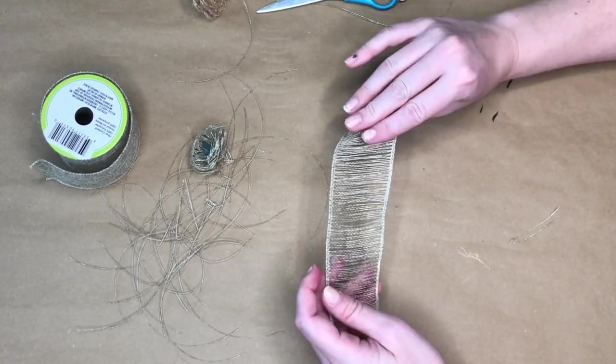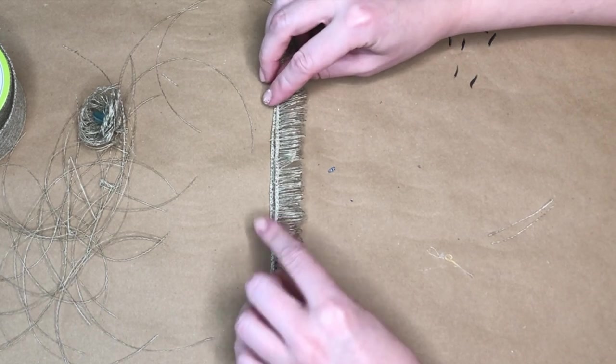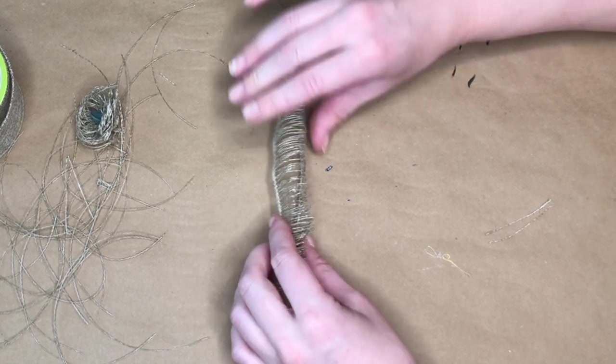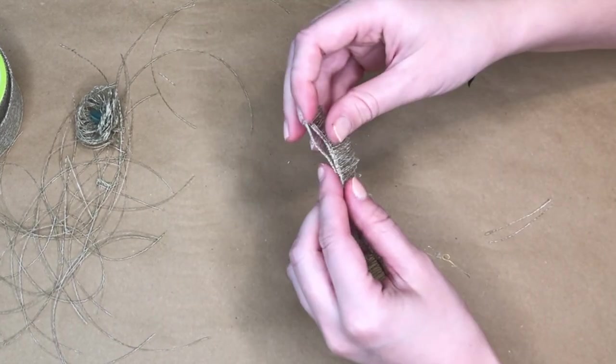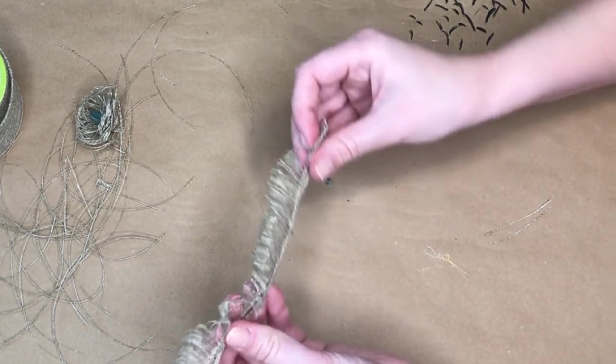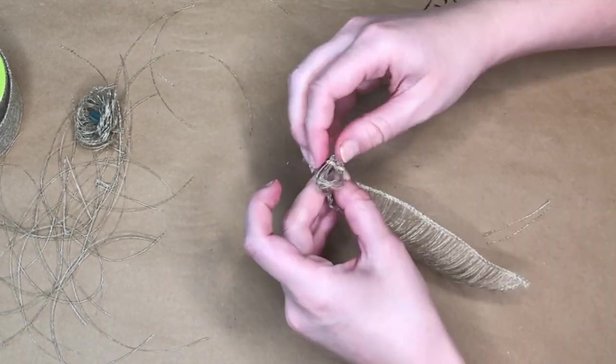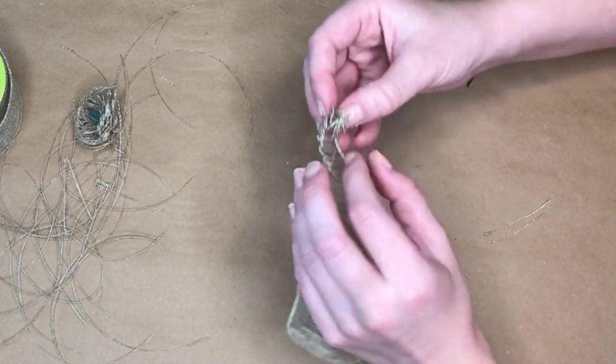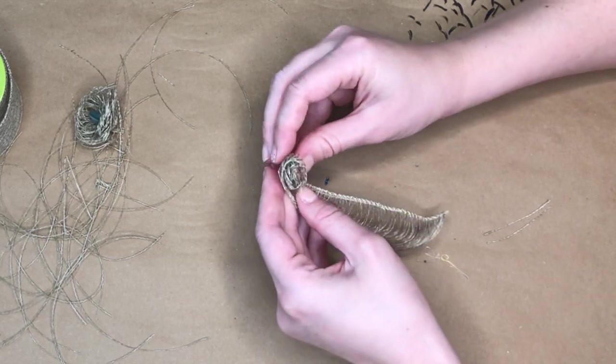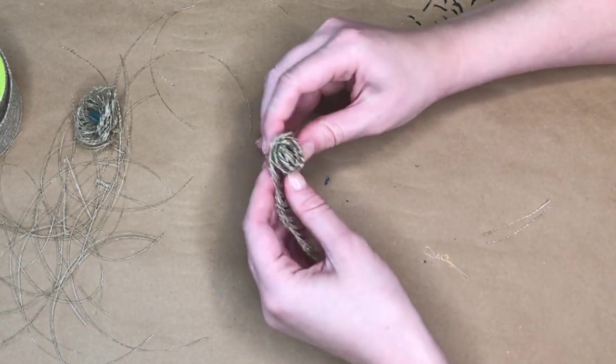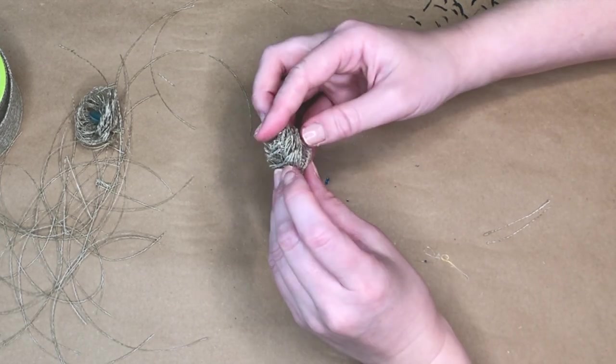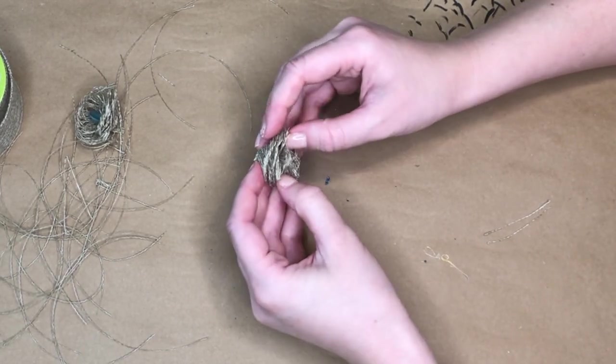Once you have removed all of the burlap strands that are running horizontal, you are going to fold it in half. It's a little easier to do with the burlap ribbon because you do have that wire. The burlap fabric will be a little harder to work with, so if this is your first time I would recommend the burlap ribbon because that wire does make things a little bit easier. Once you have folded it in half you are just going to start rolling it up.